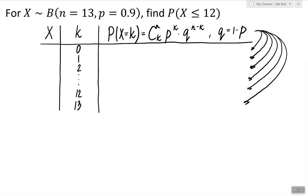However, before we start working on that, let's take a look at the question. The question is asking to find the probability of X being less than or equal to 12. Initially, we can interpret this as finding the probability of X equals 0, plus the probability of X equals 1, and so on until we get to 12.